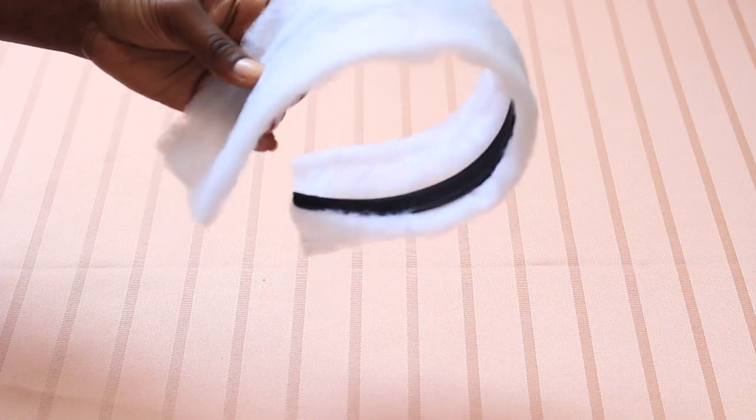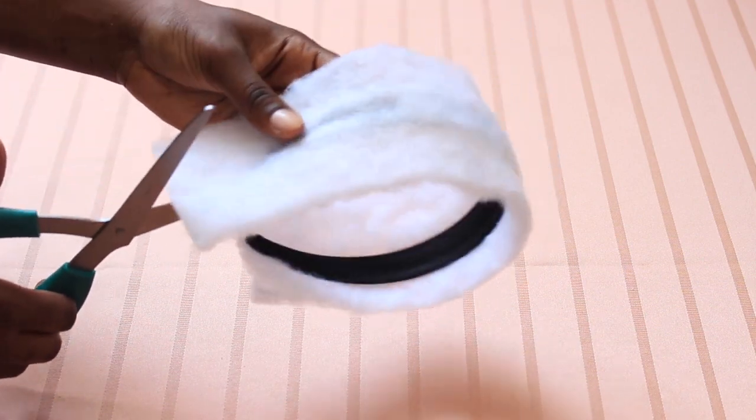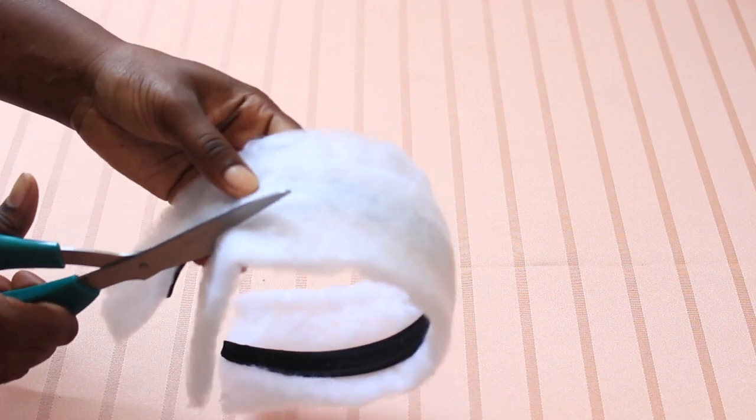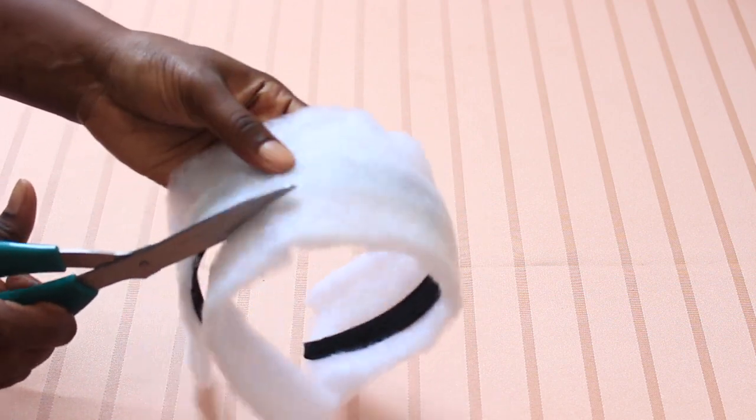After you glue on that first piece of batting, next you want to cut off the excess. So go ahead and cut off all of the excess batting around the headband.